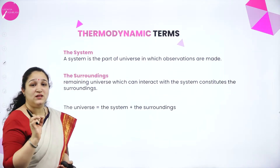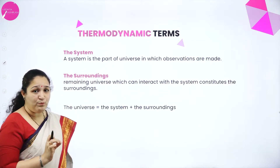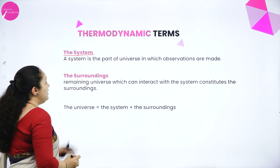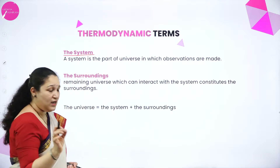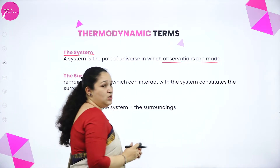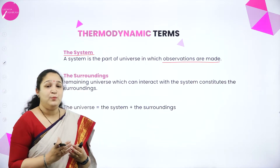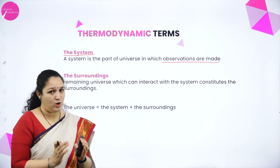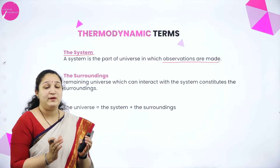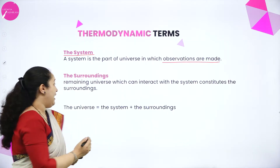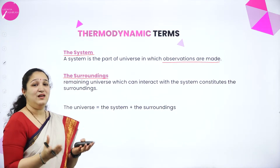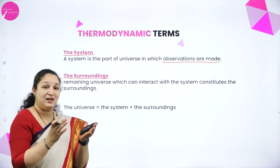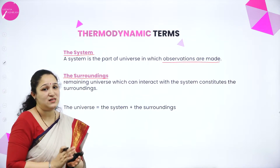Next, we are learning about some thermodynamic terms, which are very important for understanding thermodynamics. The first one is the system. System is a part of the universe in which the observations are made — where you consider a process and make all the observations for that particular process. Next, we have the surrounding: the part of the universe around the system which can interact with the system is called the surrounding.